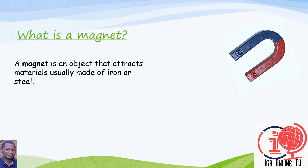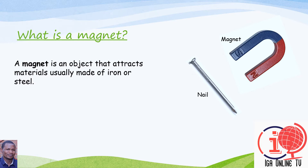For example, here we have a magnet and we have a nail. The object which is able to attract that nail is called a magnet. There is an attraction between a nail and a magnet, but a magnet attracts and a nail is attracted.